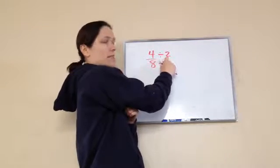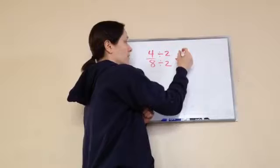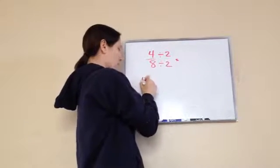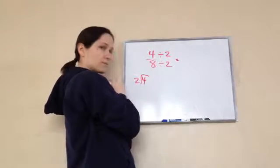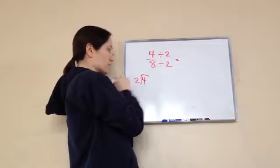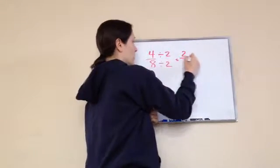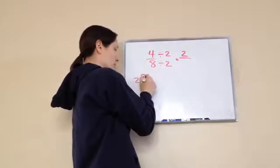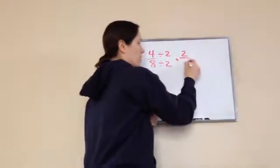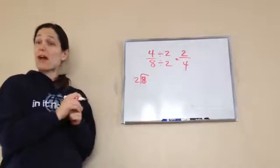So can these both be divided by 2? Yes, so let's do that. Remember doing this? Yes. So 4 divided by 2 is 2. And 8 divided by 2 is 4. 2 fourths.